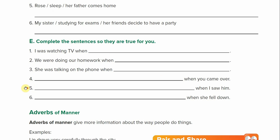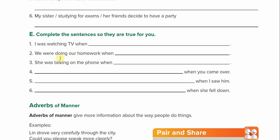The next exercise says to complete sentences that are true for you. The first three give you the past progressive, and you need to add a part with the simple past. For example: I was watching TV when I ate dinner. In numbers four, five, and six, you have the simple past — you need to add the part with the past progressive. That's how you complete this section.